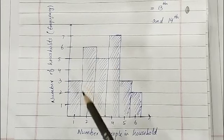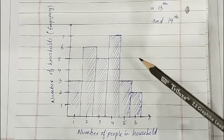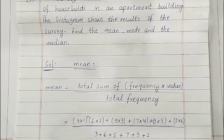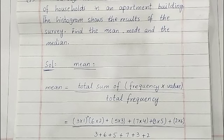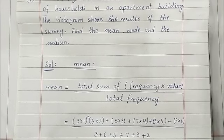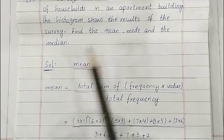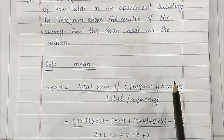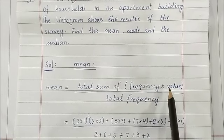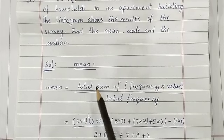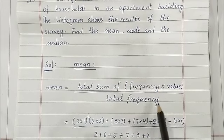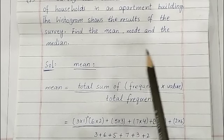This is the survey data showing how many people are living in how many households. Now first we are going to find out the mean of this data. The formula for mean is: sum of the quantities divided by the number of quantities. To find the mean through a histogram, we are going to use this formula — we will find out the sum of the product of frequency and value for each value, then add all those answers, and then find the total frequency.